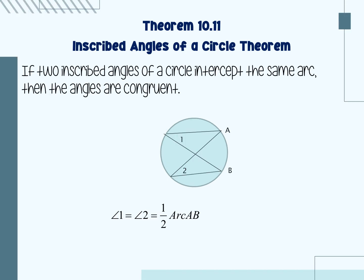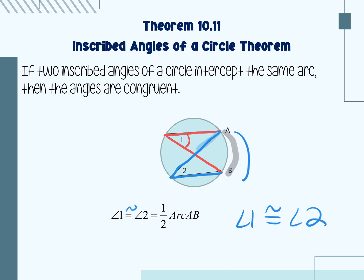The next theorem is called the inscribed angles of a circle theorem. It states that if two inscribed angles of a circle intercept the same arc, then the angles are congruent. I have angle one formed by this cord and this cord, and its intercepted arc is arc AB. Angle two's intercepted arc is also AB. So when the two angles share the same arc, angle one is congruent to angle two.